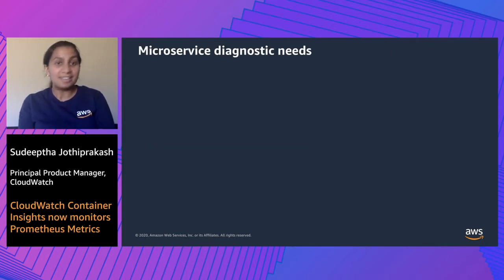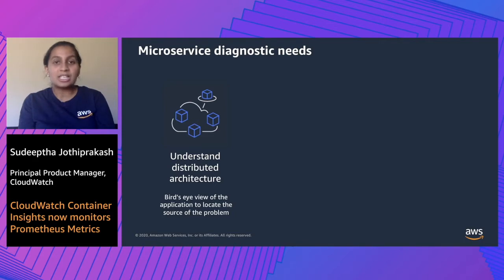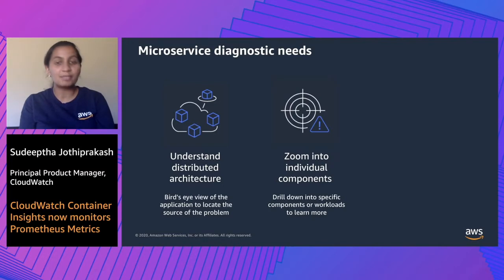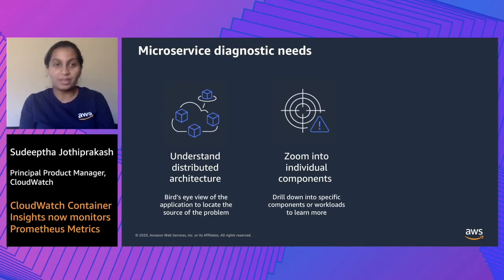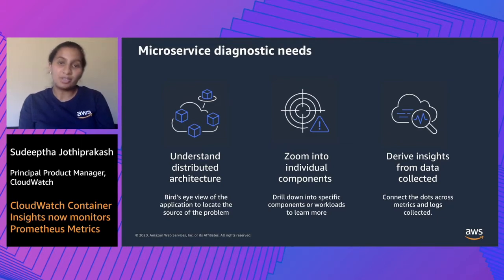Let's get started with understanding the diagnostic needs of microservice-based environments. There are three key areas that we identified. First, distributed architectures are becoming more bespoke and complex, where DevOps engineers are increasingly looking for a bird's-eye view of their application and understanding its components. They need an easy way to locate and isolate sources of issues by zooming in into individual components or workloads. While they investigate further, they need to derive insights from the data collected across their resources and connect the dots between, for example, their errors in metrics and logs.